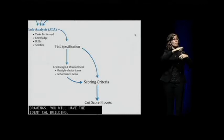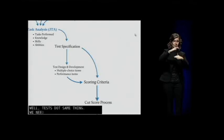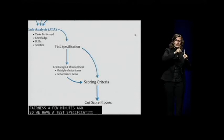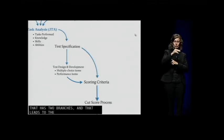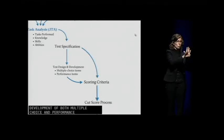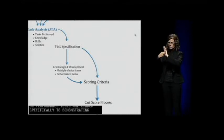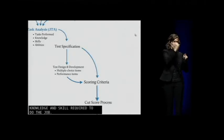That if you build a building from the same set of drawings, you will have the identical building. Well, tests do the same thing. We need to have identical tests because of fairness. Remember we talked about fairness a few minutes ago. So we have a test specification and that has two branches. That leads to the design and development of both multiple choice and performance tests.